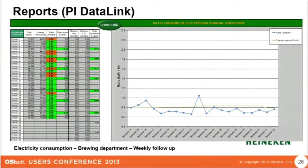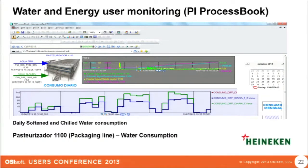We can control brewing department electricity consumption — this is a weekly follow-up. This is the daily view, showing chilled water consumption in a pasteurizer in the packaging line department.